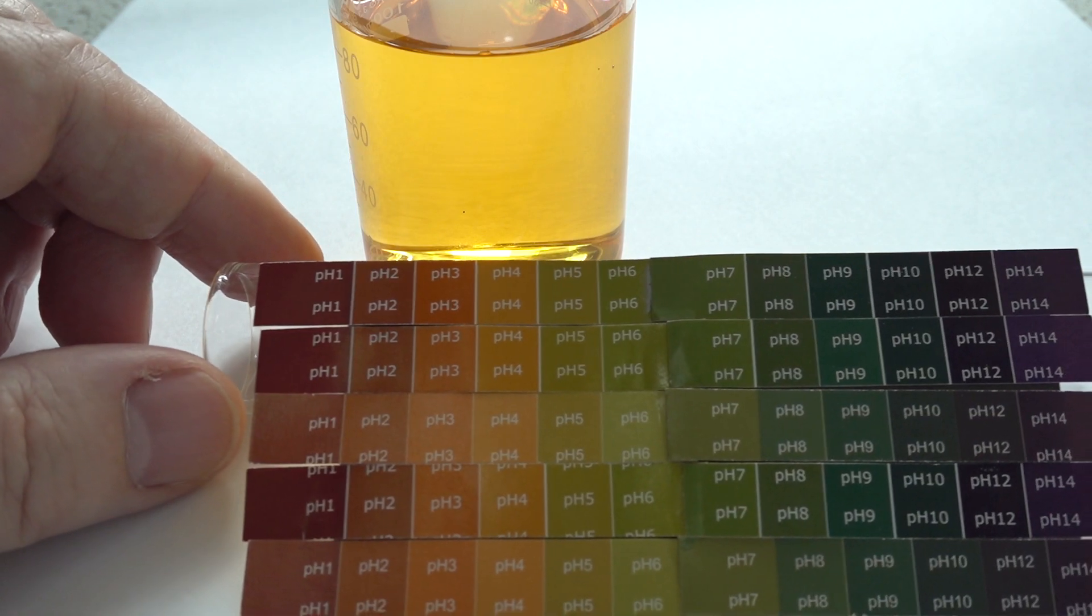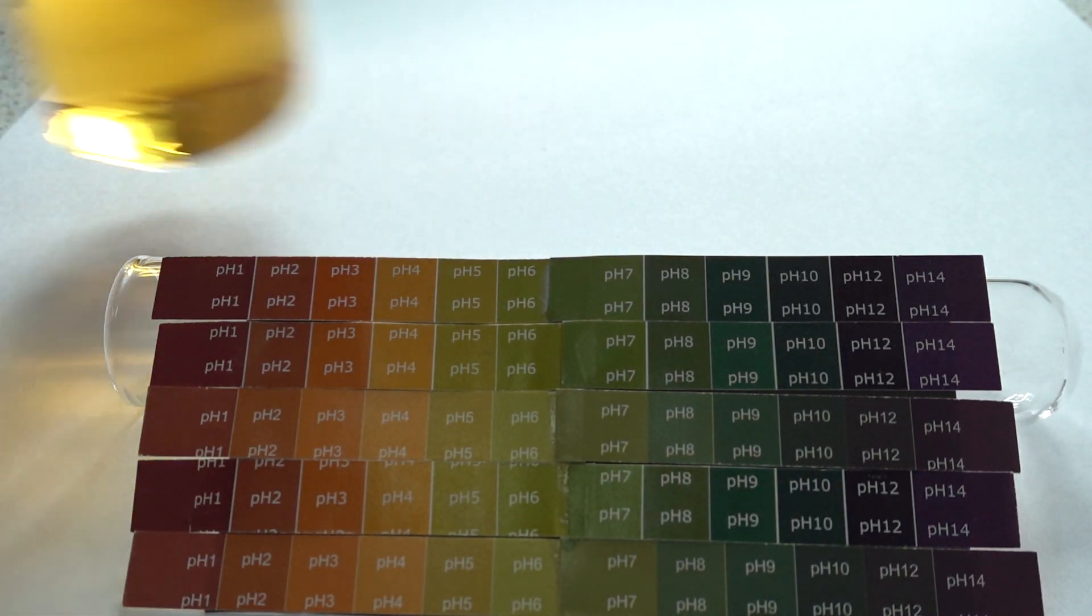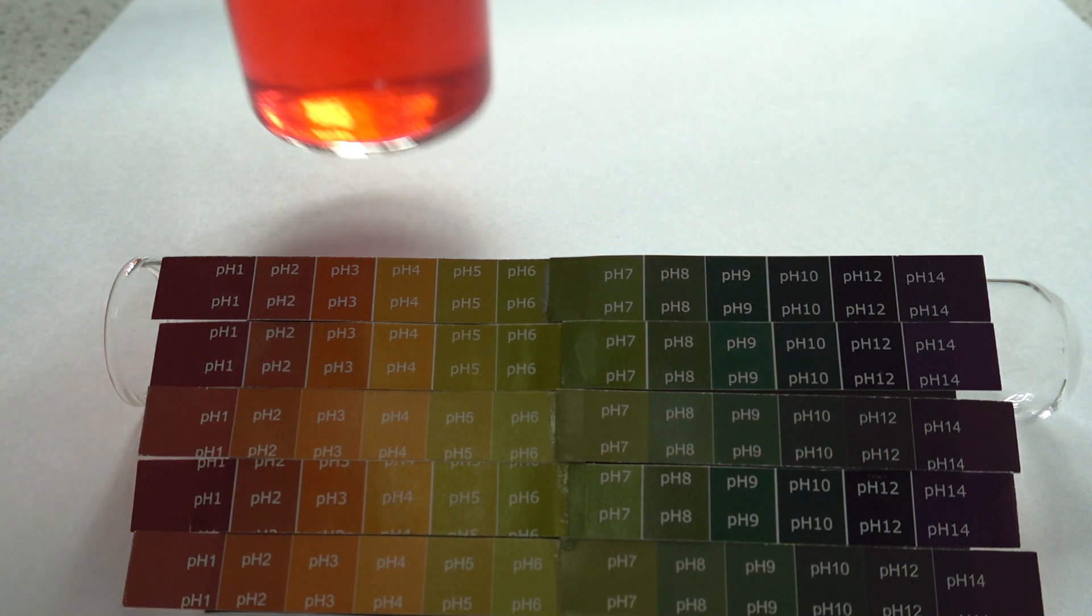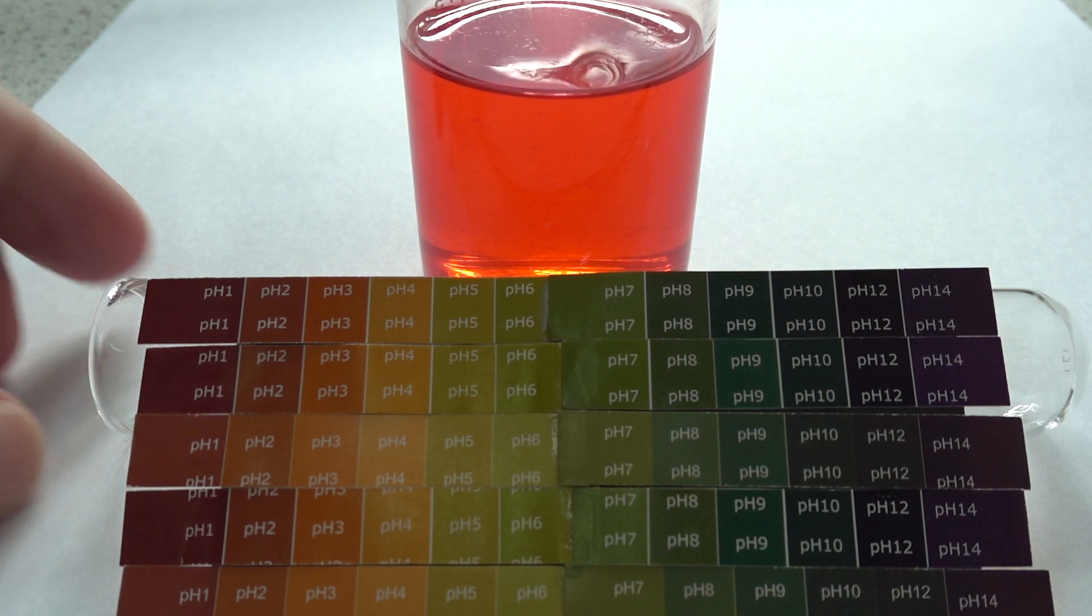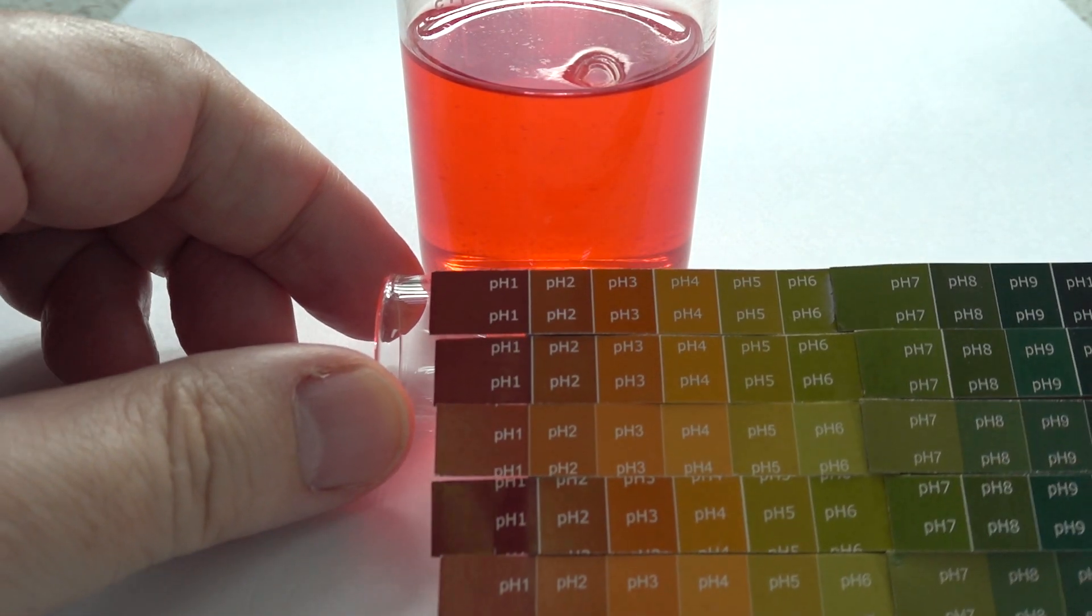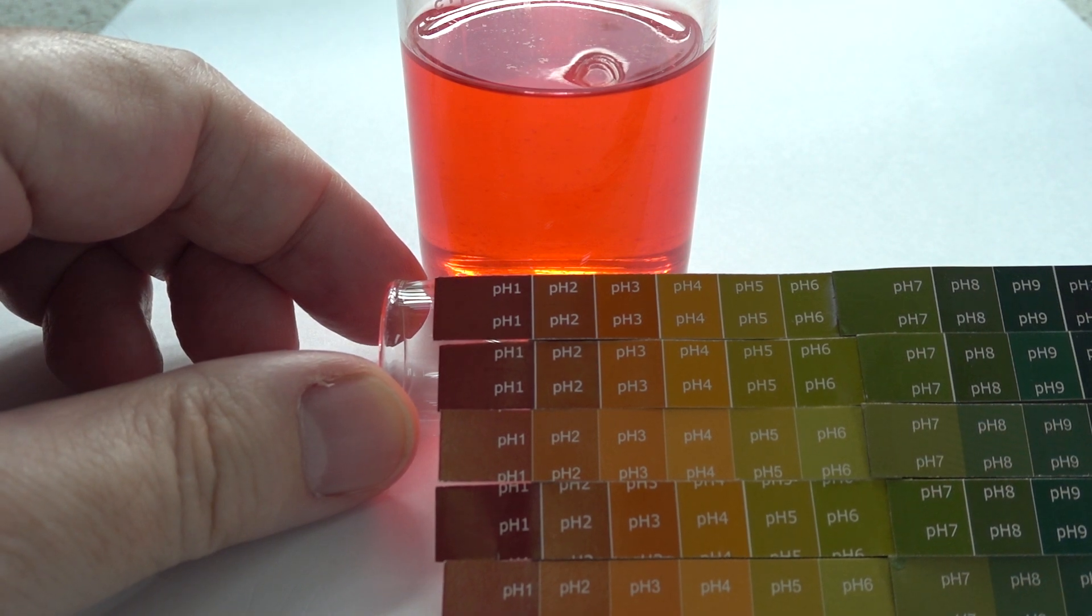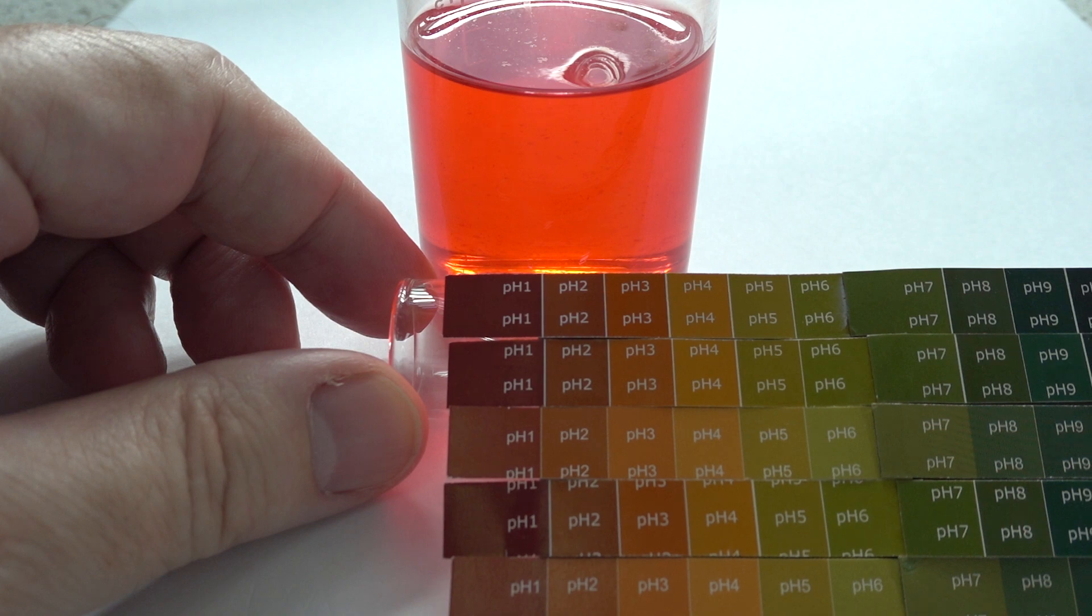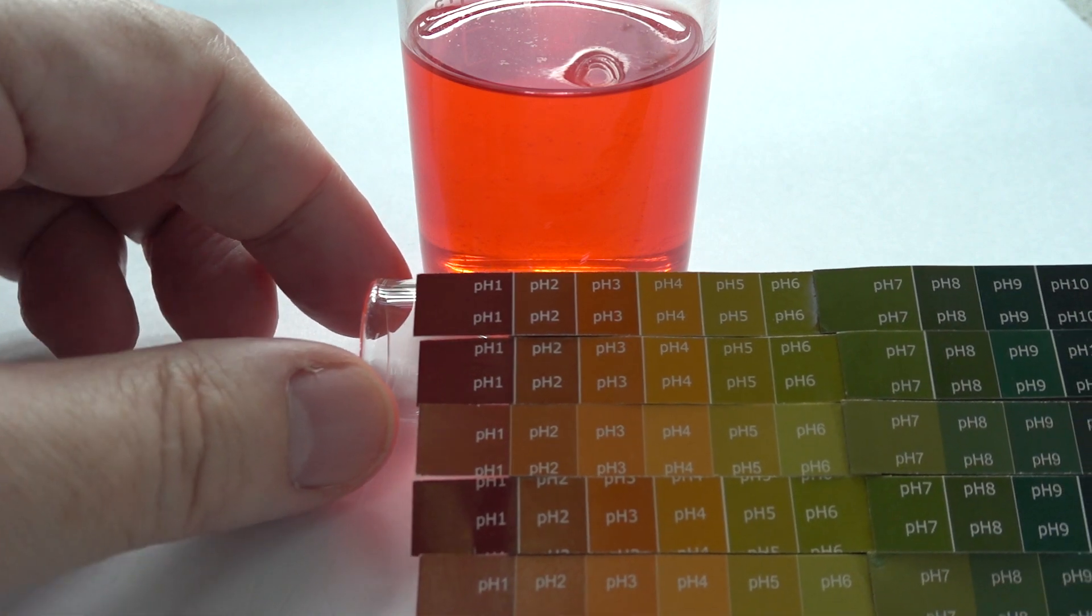Our second solution, this one much deeper in color. It's red, got some reflection of light at the bottom. We might be tempted to say that's pH 2 or even 1, and it's clearly a strong acid.